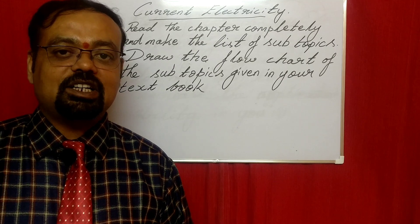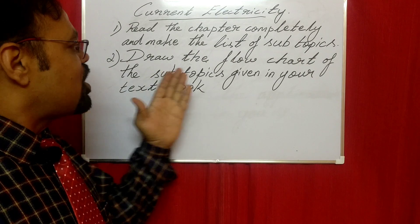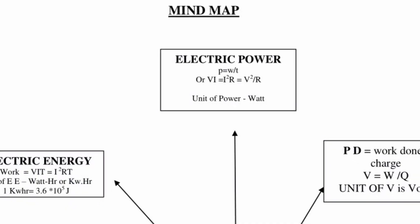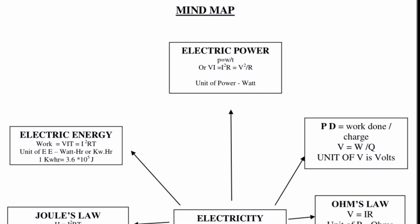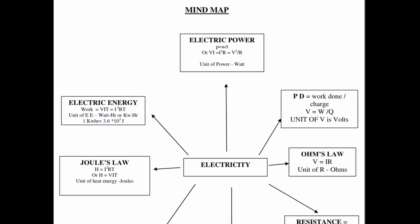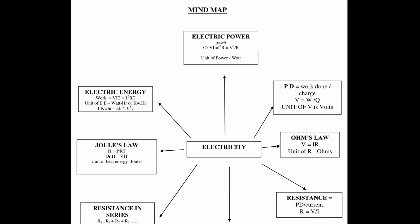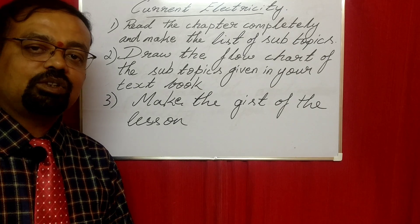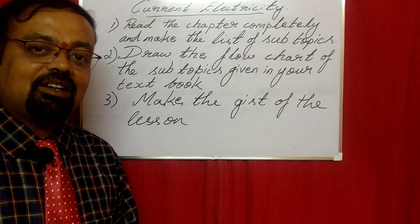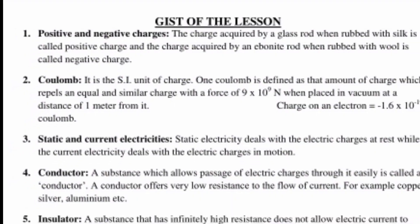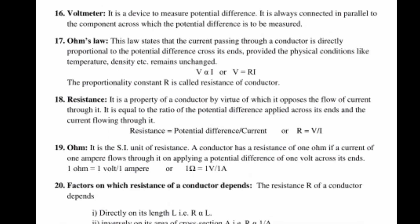Immediately after completing the reading of the topic or chapter, draw a flowchart of the subtopics given in your textbook. This is how I have drawn the flowchart for my understanding. You can also try to draw the flowchart in different ways, which makes the impossible things possible. After making the flowchart, read the chapter a second time slowly and make the gist of the lesson, page by page.